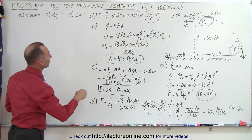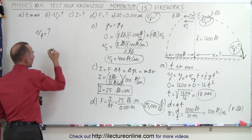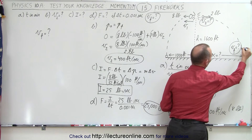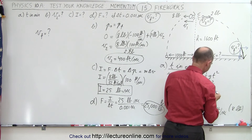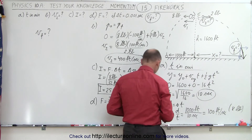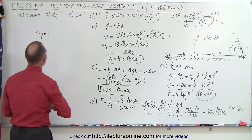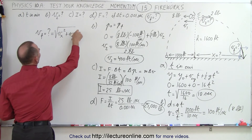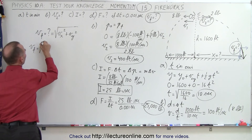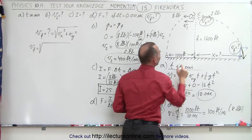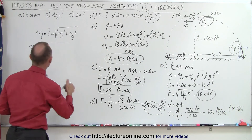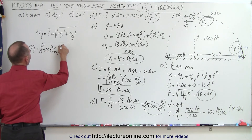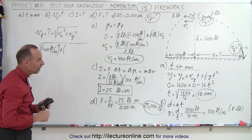Finally, let's find the final impact velocity. The final velocity will consist of two components: the horizontal velocity and the vertical velocity. V-final equals the square root of v-x squared plus v-y squared. For the two-pound piece, v-x is v2, which we found to be 400 feet per second. We also need the vertical velocity on the way down.